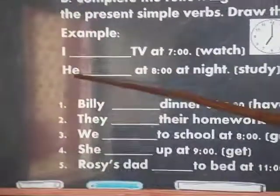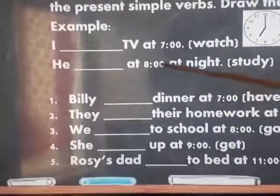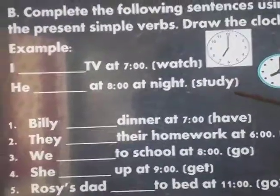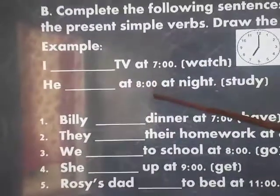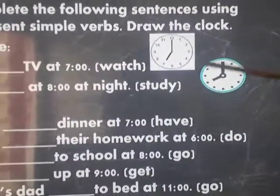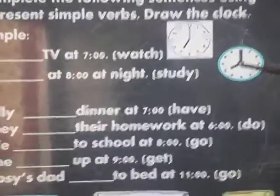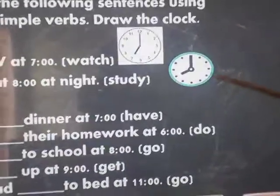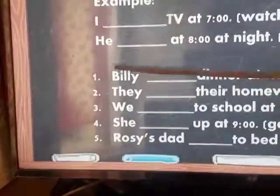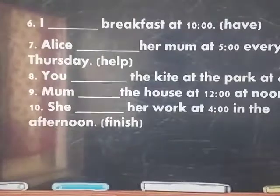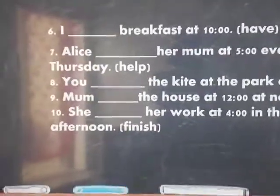For singular subjects, remember to change Y to IES — for example, 'He studies at nine o'clock.' Draw a clock with the short hand pointing to eight and the long hand pointing to twelve for eight o'clock. Homework B also has ten questions — one through ten. Do you understand?